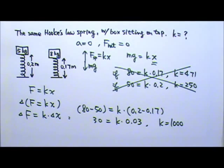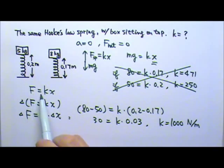What is the unit for spring constant? It is newtons per meter, because it's newtons equals spring constant times meters.